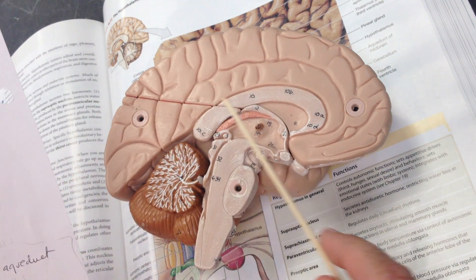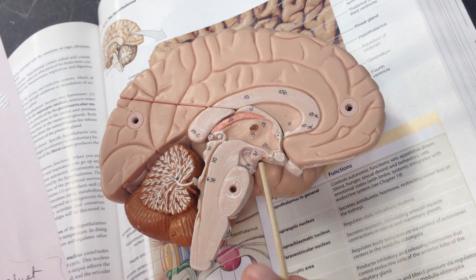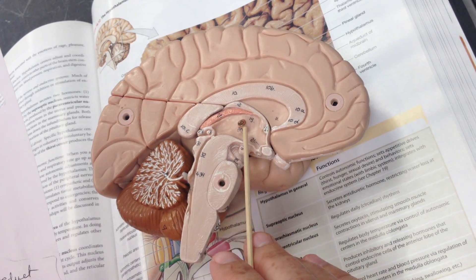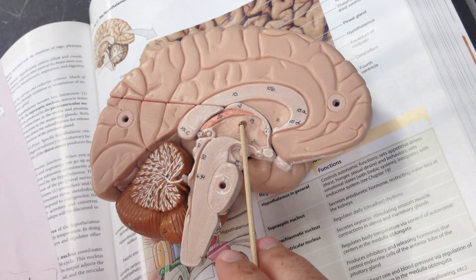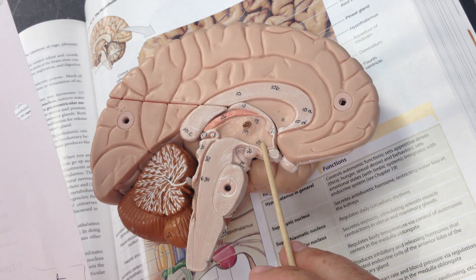The fornix, the thalamus, the interthalamic adhesion, the hypothalamus.